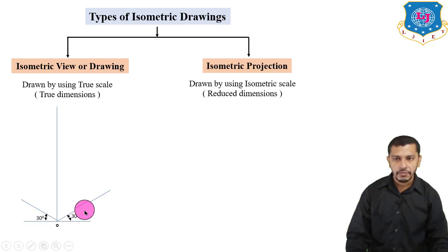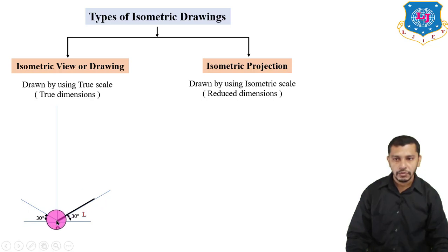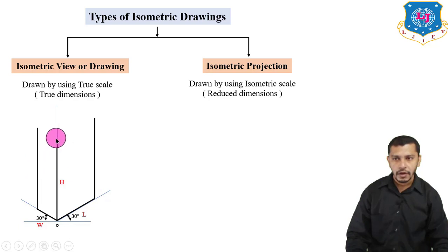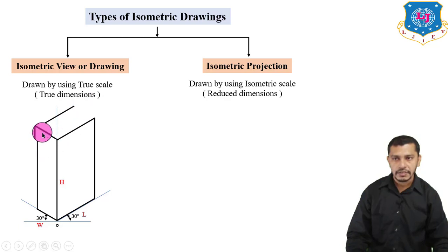We observe the object format and take the front view in this direction. We show the length of the cuboid on this axis as L mm, the width on this axis as W mm, and the height on the vertical axis. From these points, we draw lines perpendicular to the baseline having length H mm. Then from this point to this point, equal to the length of the cuboid, draw lines parallel to complete the isometric view.